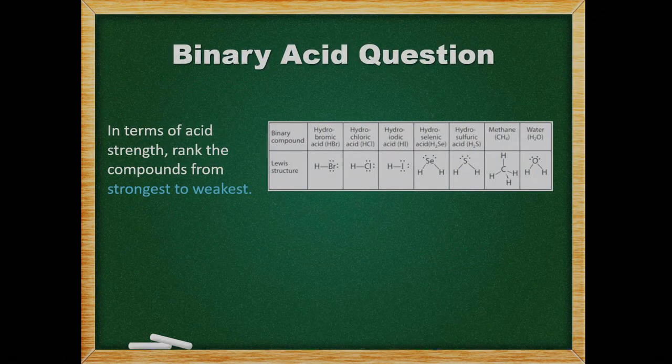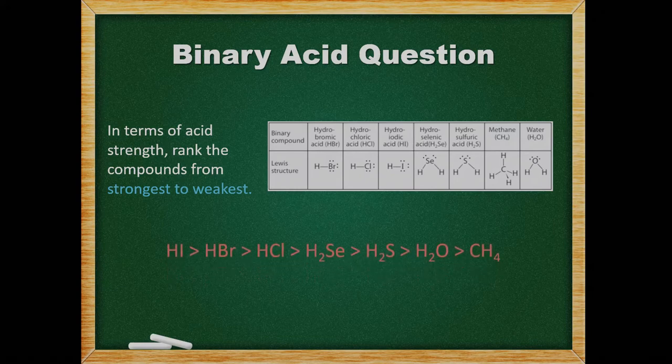Here we need to rank the compounds from strongest to weakest. As the central atom size increases, the bond strength decreases. This means that hydroiodic acid is stronger than hydrobromic acid, which is stronger than hydrochloric acid. More hydrogen atoms leads to stronger bonds, so compounds with more hydrogen atoms are weaker. Selenium is larger than sulfur, and sulfur is larger than oxygen, so hydroselenic acid is stronger than hydrosulfuric acid, which is stronger than water. Methane contains four hydrogen atoms and is the weakest acid present in this example.